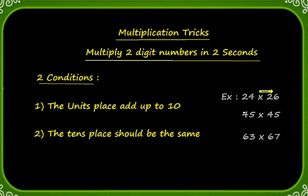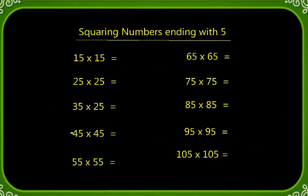Using the same shortcut and the same two conditions, even squaring of numbers ending with 5 is possible, because 5 plus 5 adds up to 10 and the tens place is also the same: 1 and 1, 2 and 2, 3 and 3, 4 and 4, and so on. We are going to use the same shortcut.